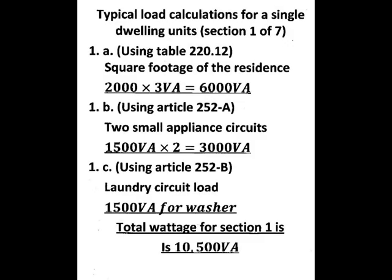Using a typical house, we're going to say that it's 2,000 square feet. Using table 220.12, you take the square footage of the residence and multiply it by 3 volt amps. That gives you 6,000 volt amps. You've got to have the two small appliance circuits added in there, which is 252-A, giving you 3,000 volt amps. We also include the laundry circuit 252-B, which is considered 1,500 volt amps for your washer. That gives you a total wattage of 10,500 volt amps or watts.